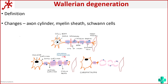If a short note is asked on Wallerian degeneration, you have to start with the definition — that these are the changes that occur distal to the site of injury — and also mention the changes in the axon cylinder, myelin sheath, and Schwann cells, as well as draw the diagram.